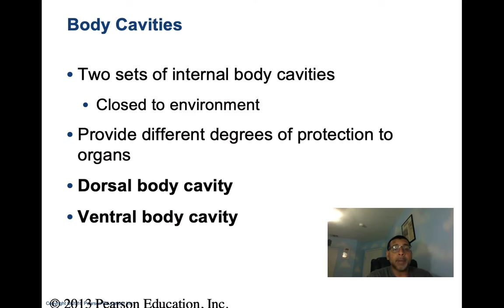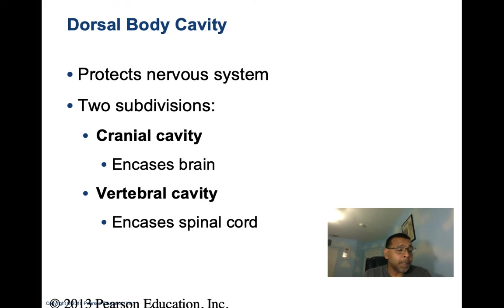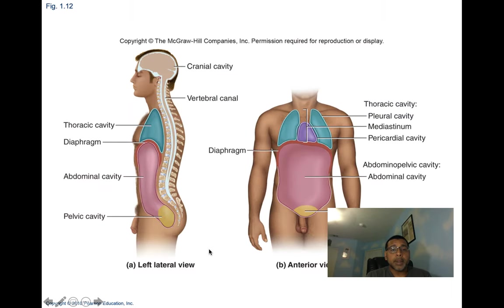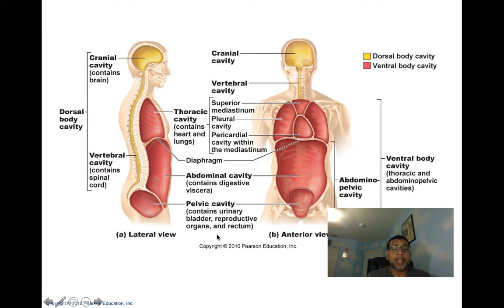Let's talk body cavities and membranes. There are two sets of internal body cavities closed to the environment, providing different degrees of protection to the organs within them. First, the dorsal body cavity, whose function is to protect the nervous system. Its subdivisions include the cranial cavity, which encases the brain, and the vertebral cavity, which contains the spinal cord. The vertebral cavity runs within the bony vertebra and encases the spinal cord.